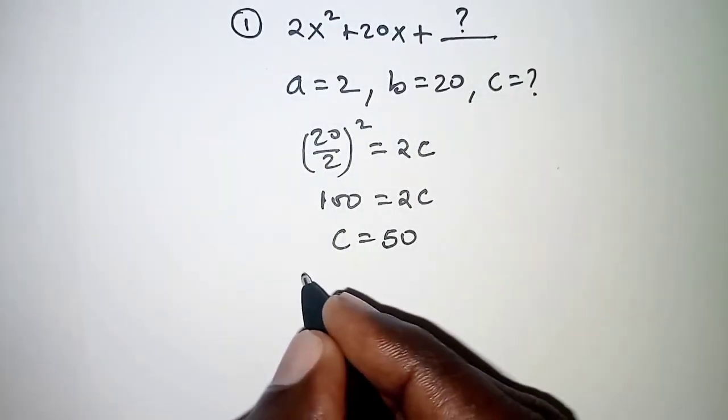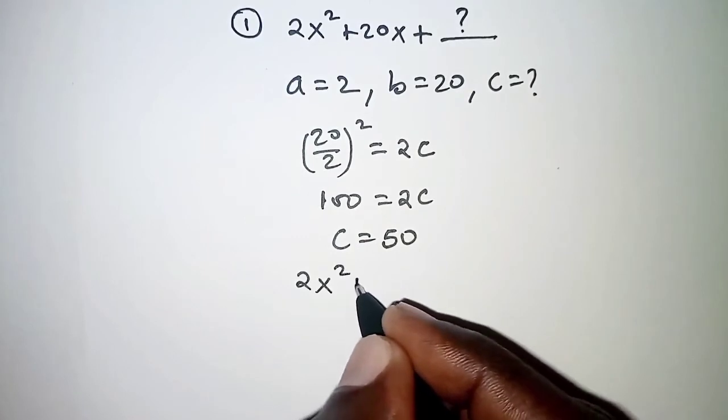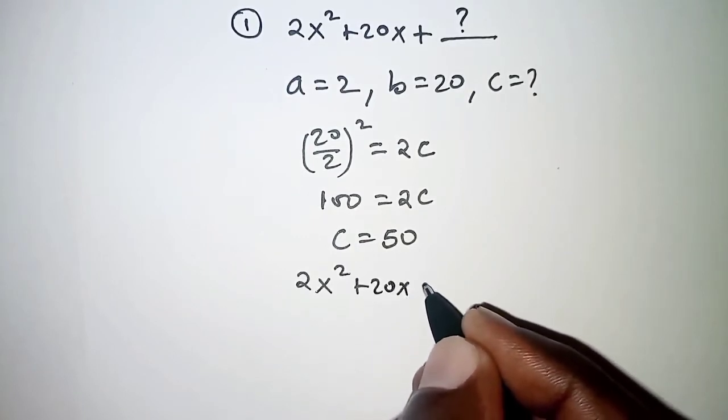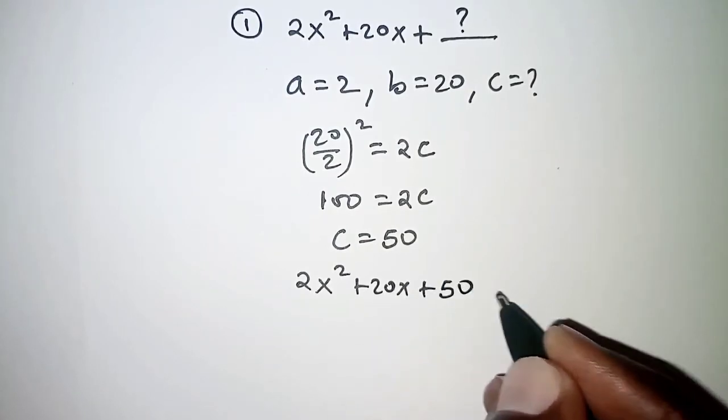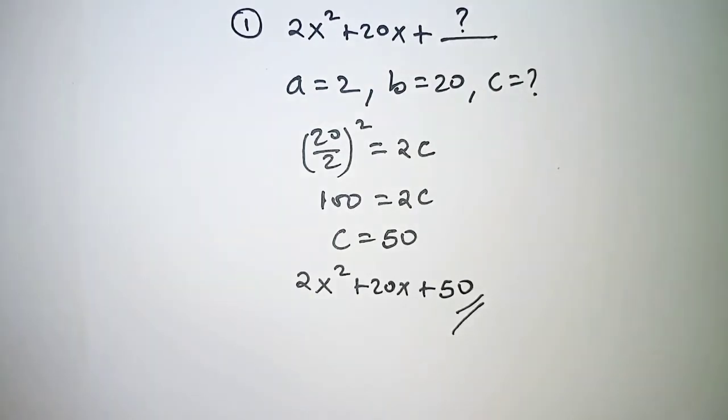we can therefore write the expression as 2x² + 20x + 50, and thus we have completed the square.